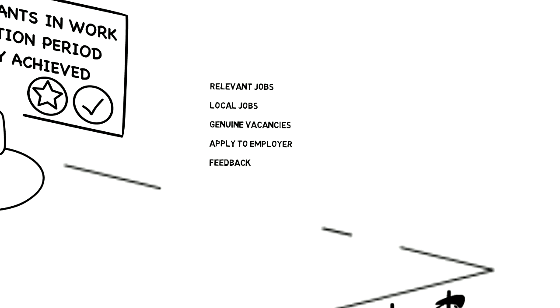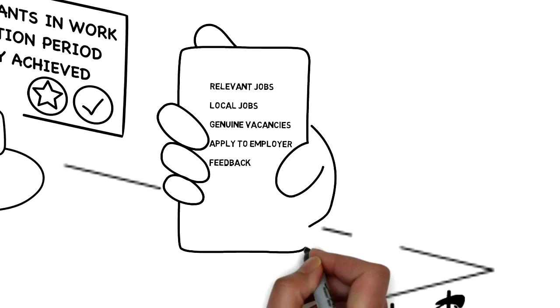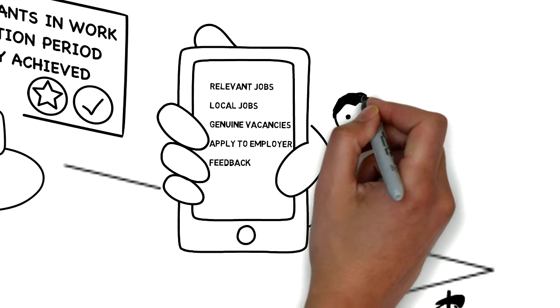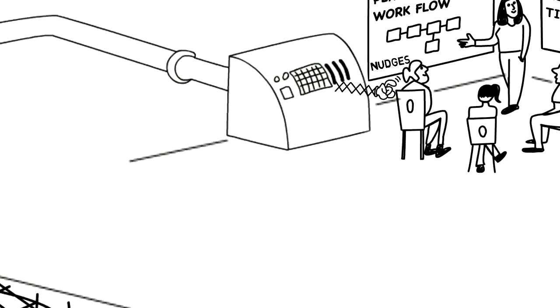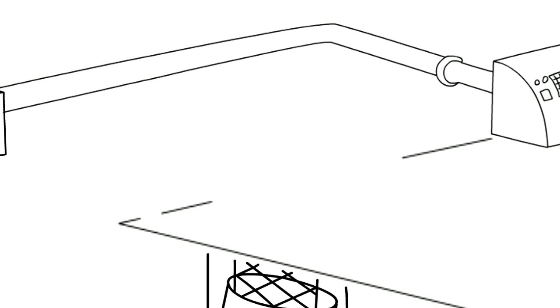And, having applied for a job, there should be feedback on the progress of their application. And this should all be available on a mobile device. A recent survey showed that 55% of claimants use a mobile device to access job boards, and this number is increasing.